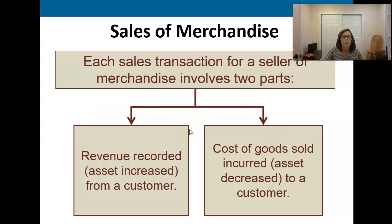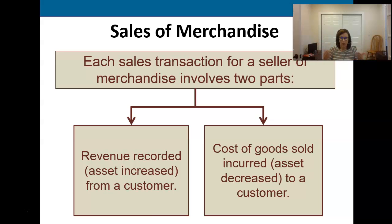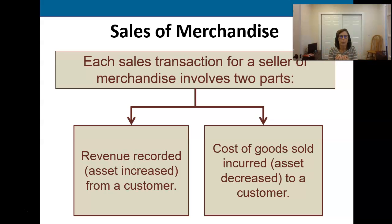When we sell items on the perpetual system we have two different entries that we make. What differentiates the perpetual from the periodic system is that in the perpetual system we are making inventory adjustments for every item that goes out the door, so we already know in real time what we have left in our warehouse. Because of that, we've got two parts to record every transaction of items that we're selling under the perpetual system.